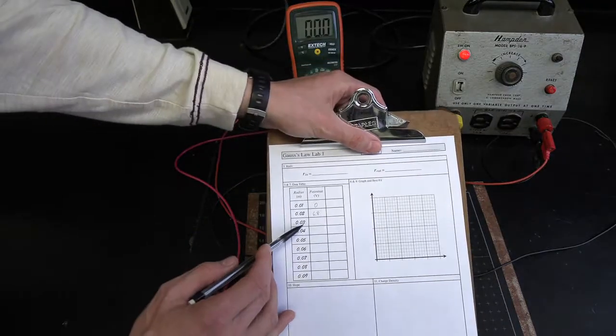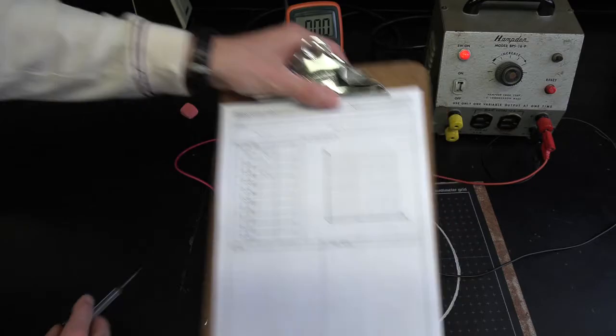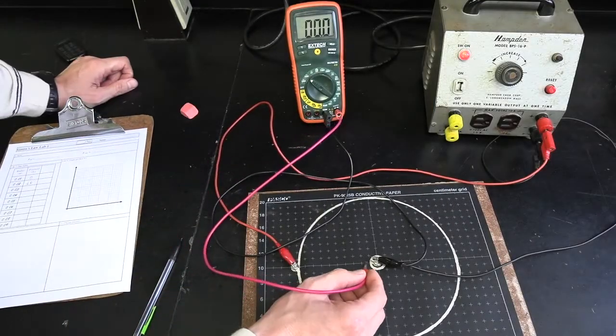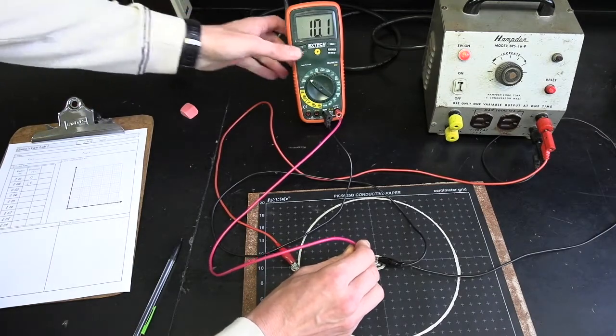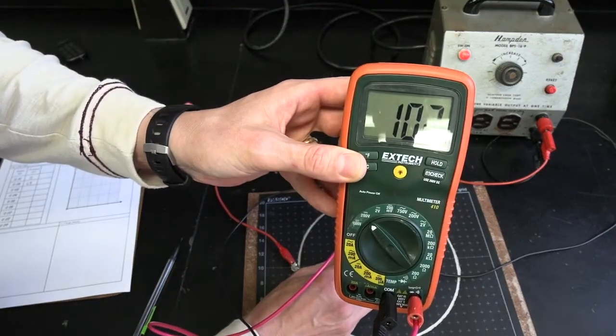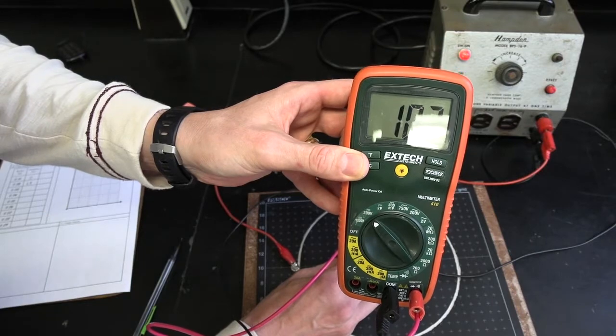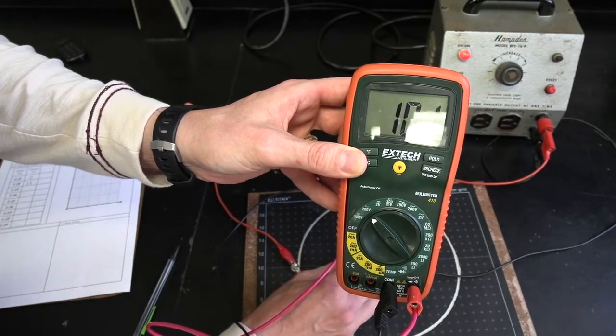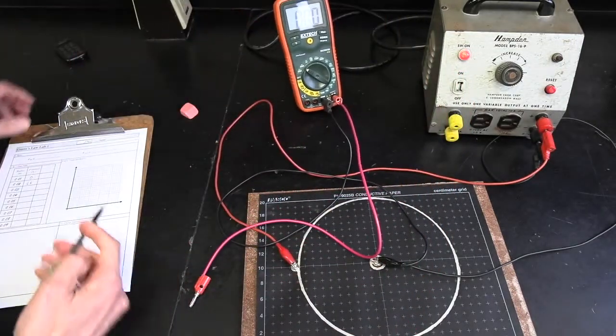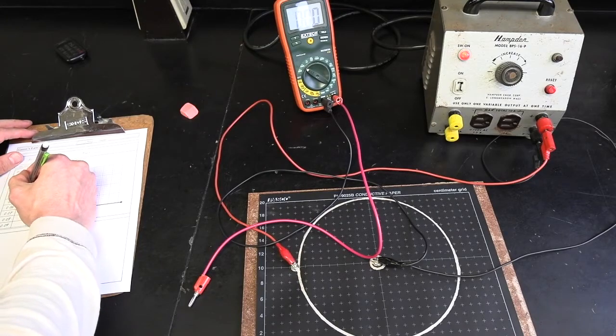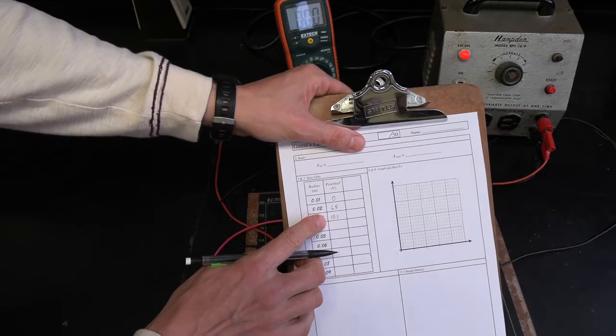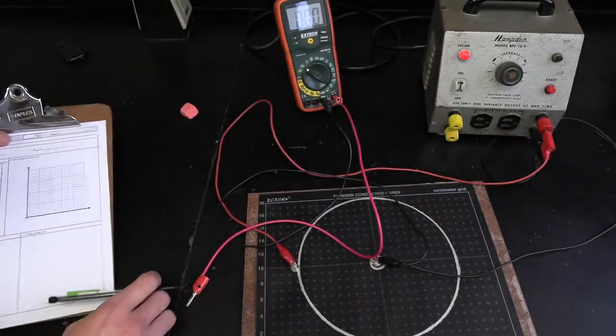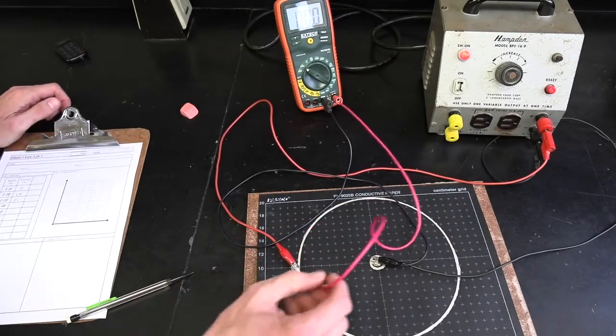So now, of course, I go to 3 centimeters, 4, 5, 6, and on up. So radius 1, radius 2, radius 3, right there. And I see about 10.1. Looks like it's lingering most around 10.1. So I will write 10.1 in the next slot right here. Again, you're going to get your own data from the sheet, Google sheet. So now I'm going to go to 4 centimeters.